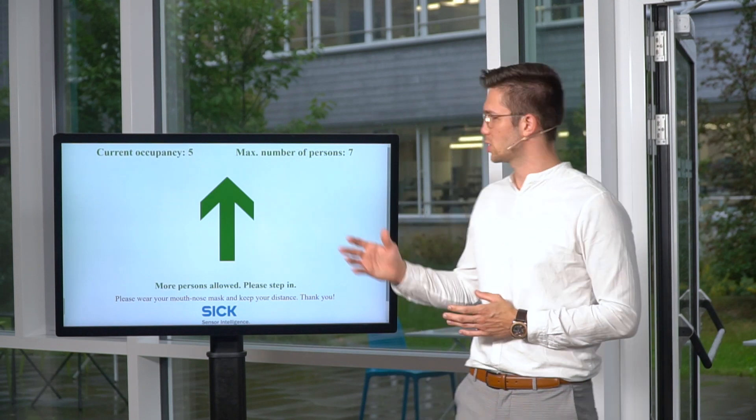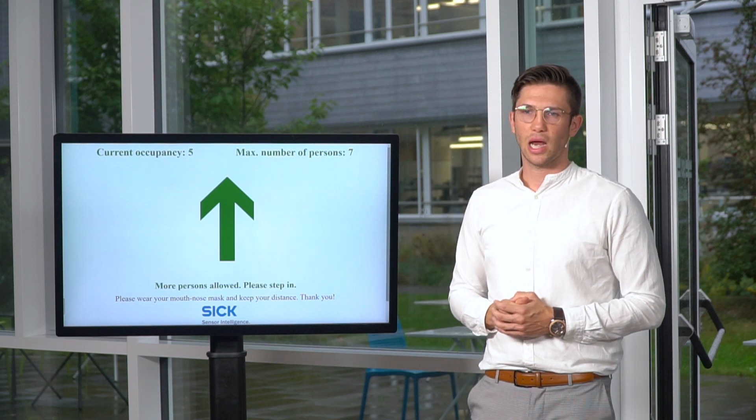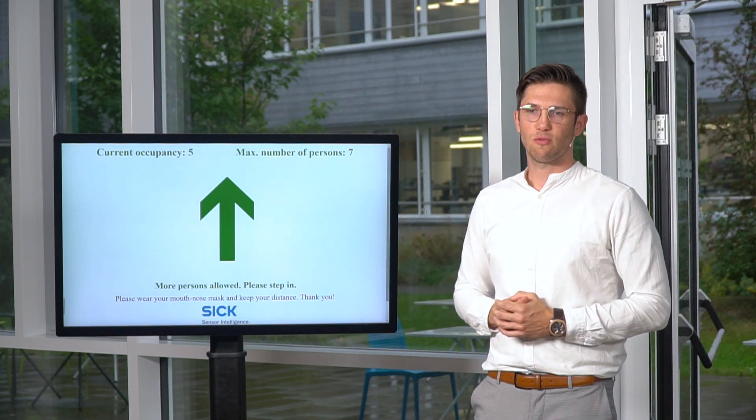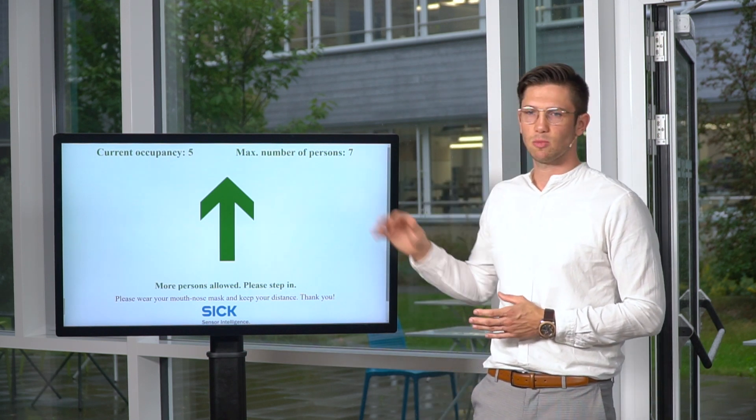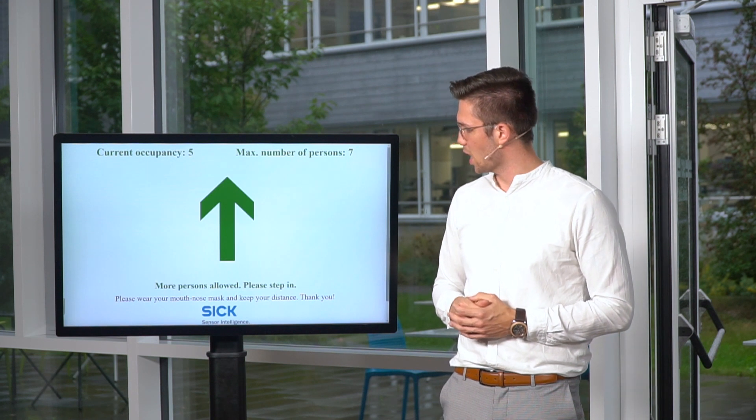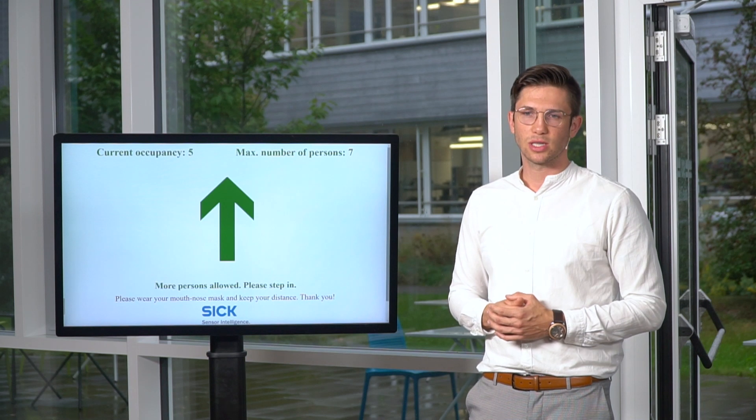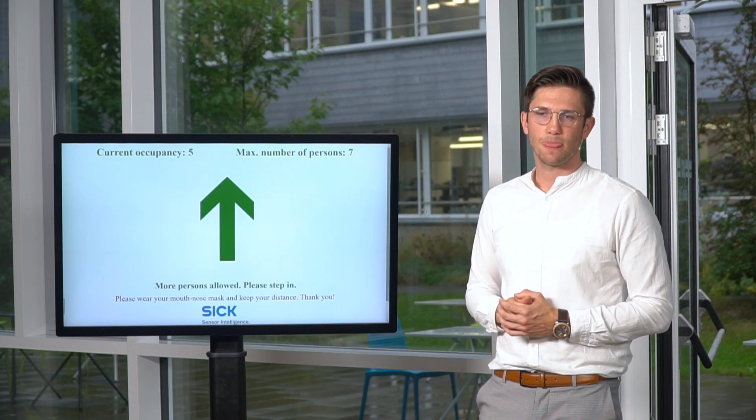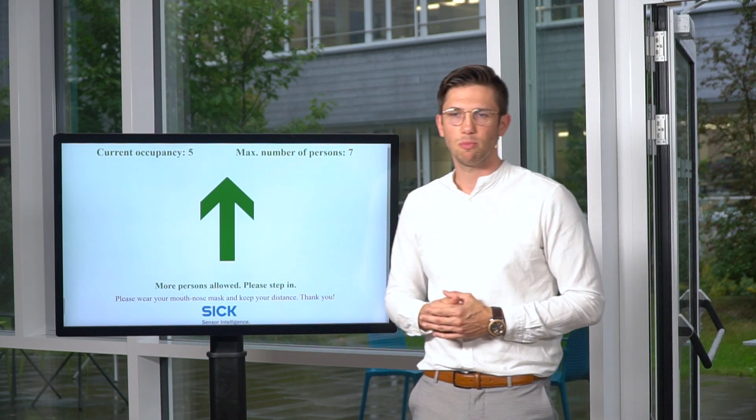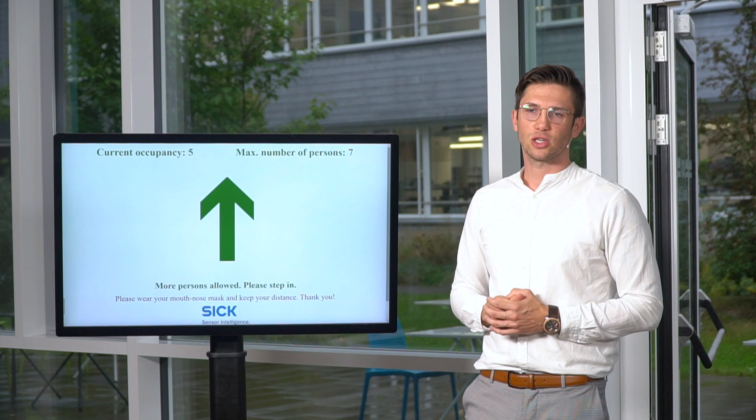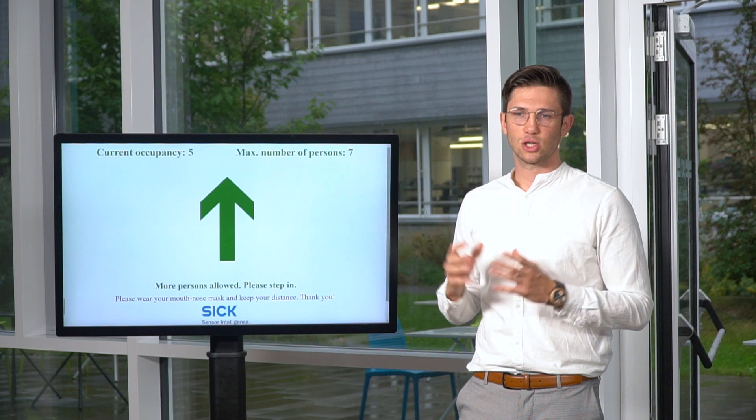Here we are seeing the current occupancy on this area. Here we have five people around and the configured maximum number of people. So the maximum capacity is 7 for this area. Here we get the feedback that more people are allowed to step in with the green arrow. And if the situation is overcrowded and the maximum number of people is reached, the green arrow will change to a red stop sign. And the feedback shows up, please wait in front of this area.